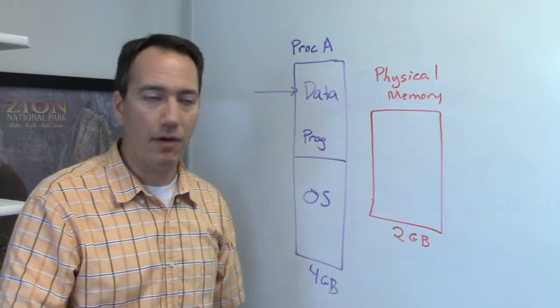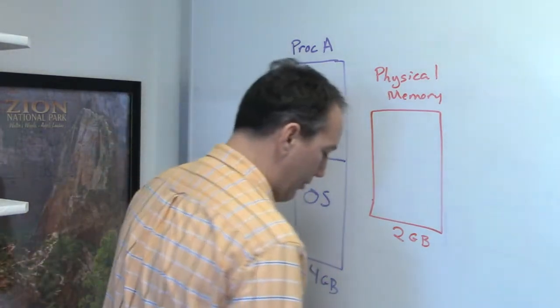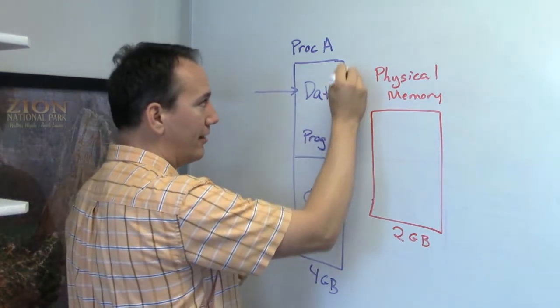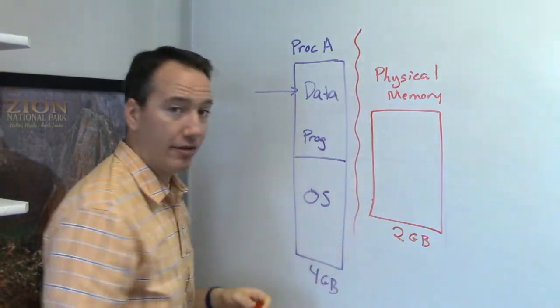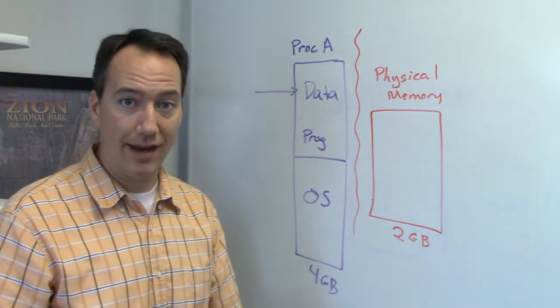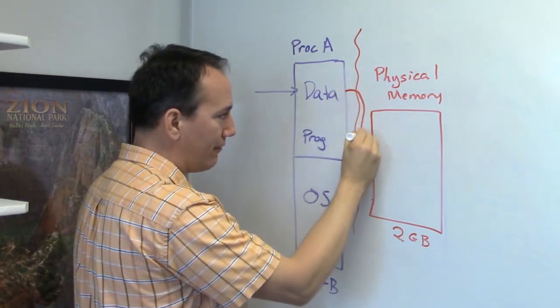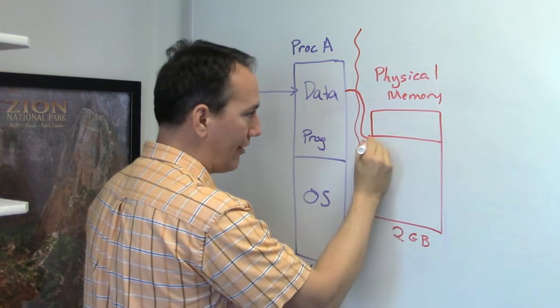The operating system and the hardware work together to translate that process into a physical load or store. So you can imagine, and I'm not going to go over the details in this class because it's like two or three weeks of taking an operating systems course, but the basic idea is that address gets converted into a physical address lookup.